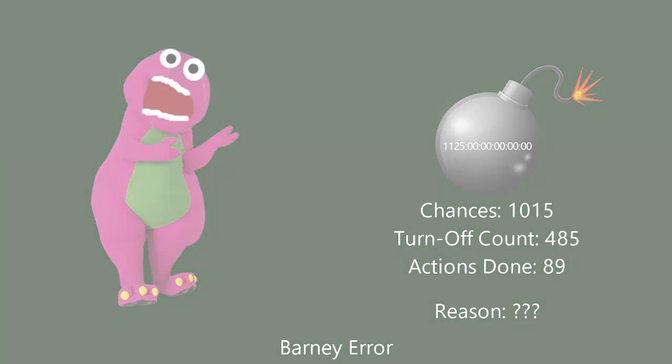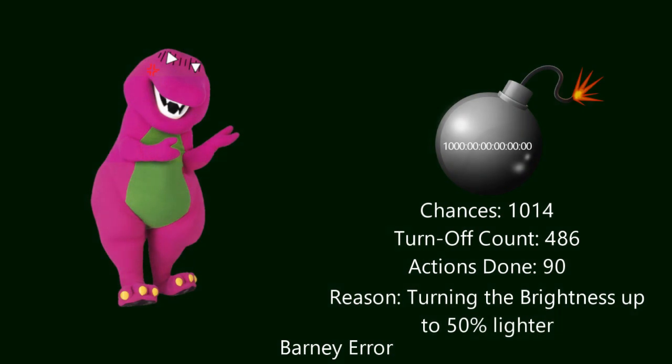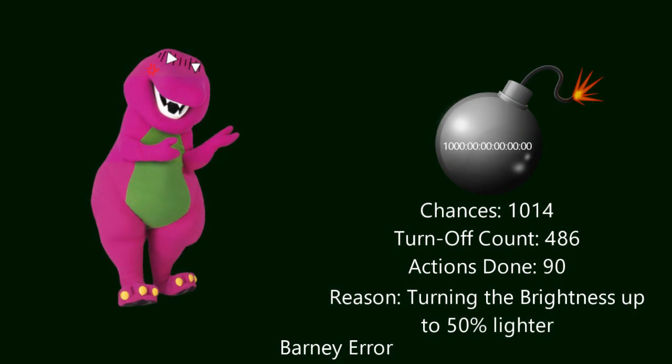Eric! I can't see a thing because it's too bright for me because you did this to me. That also counts as your 90th action. This leaves 1014 chances for you and the timer has been depleted to 1,000 months.